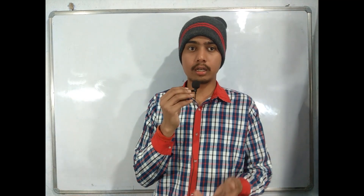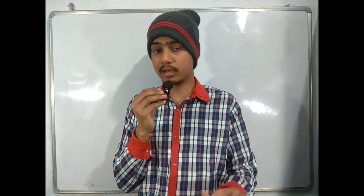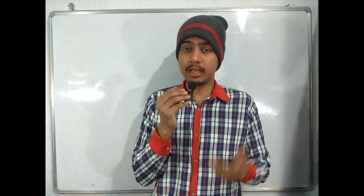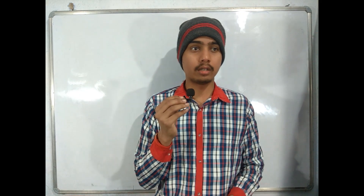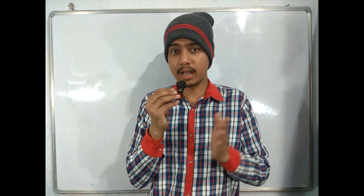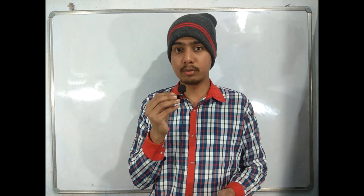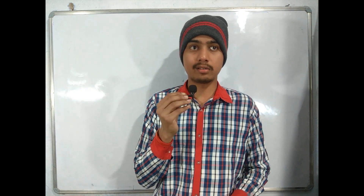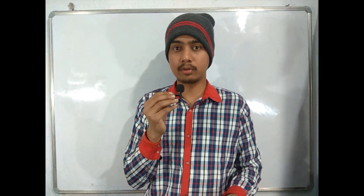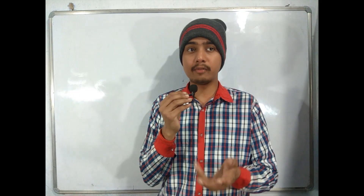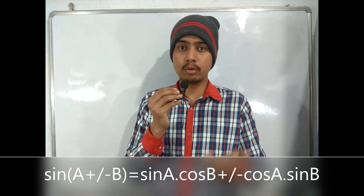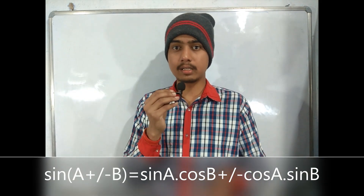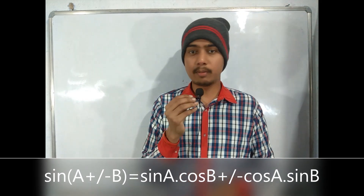Secondly, we'll talk about another Indian Mathematician whose name is Bhaskaracharya. He is also a great mathematician. He said that any number divided by zero gives infinity. The hundredth part of the circumference of any circle appears to be a straight line, and our earth is spherical and hence it appears to be flat. He also gave many formulas such as sin(a ± b) = sin a cos b ± cos a sin b.